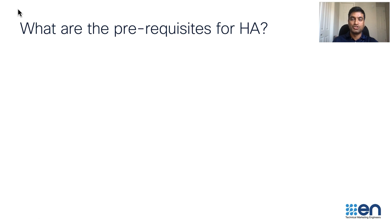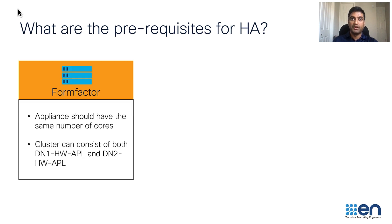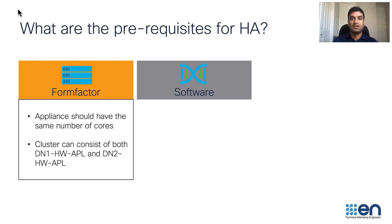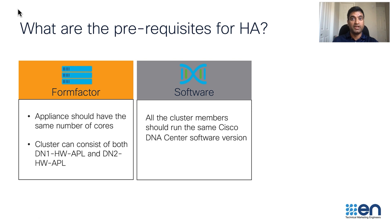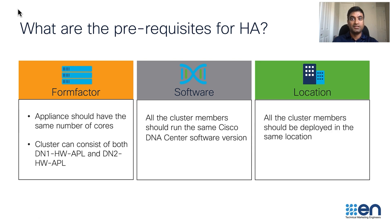There are three prerequisites to configure high availability. All the three appliances should have the same number of cores. On the smaller appliance, you may form a three-node cluster with a combination of first and second generation Cisco DNA Center appliances. Install the same Cisco DNA Center software version on the three cluster nodes before activating high availability. Ensure that the three cluster nodes are deployed in the same location.